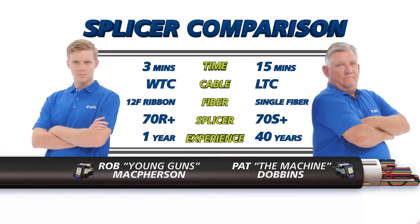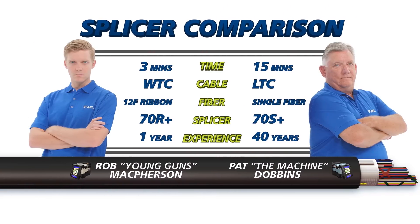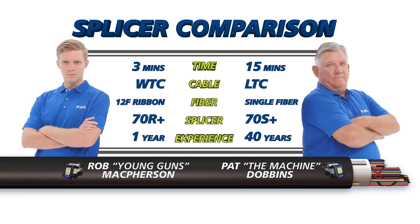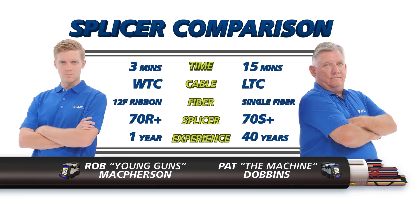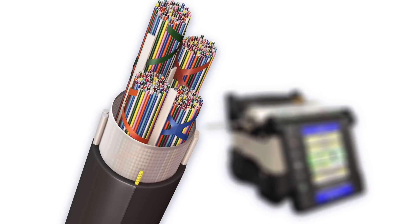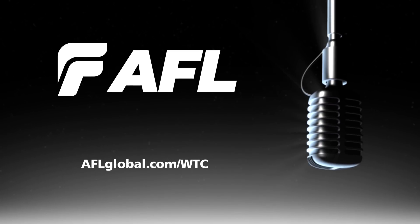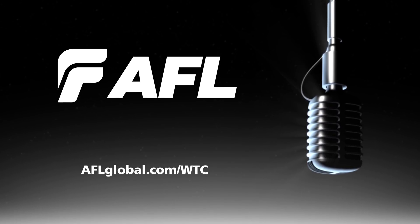The victor is clear. AFL spider web ribbon wrapping tube cable and the 70R take the day. Contact an AFL representative to find out more about how your company can win the fight every time. With AFL in your corner.